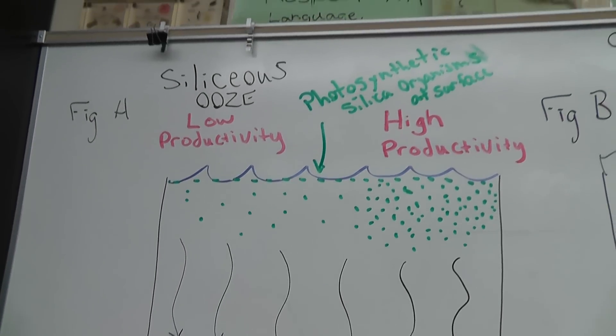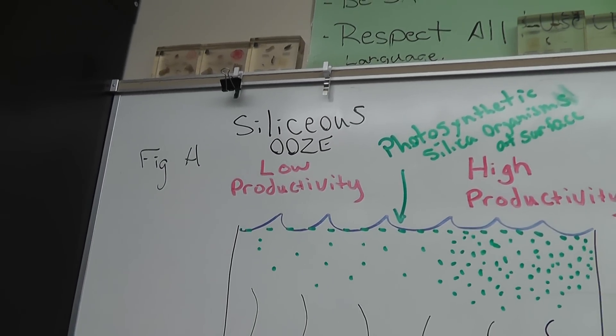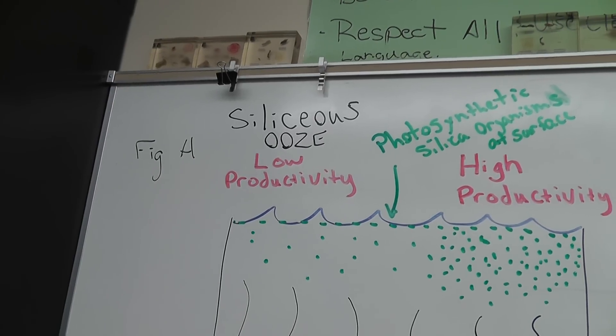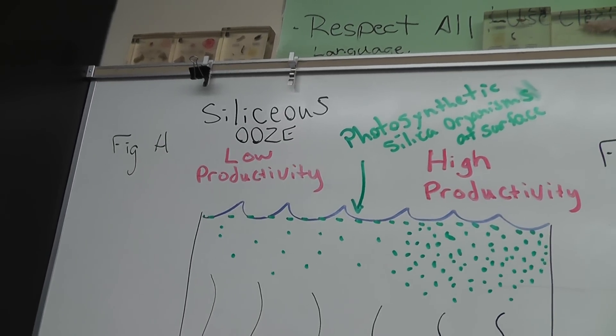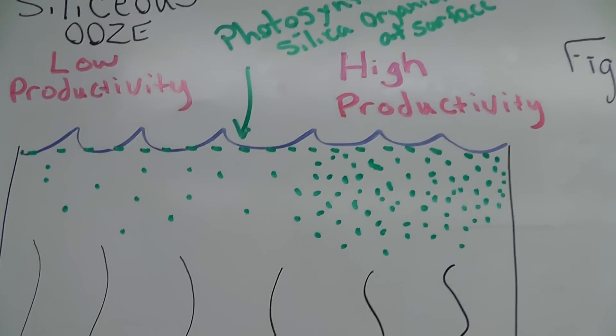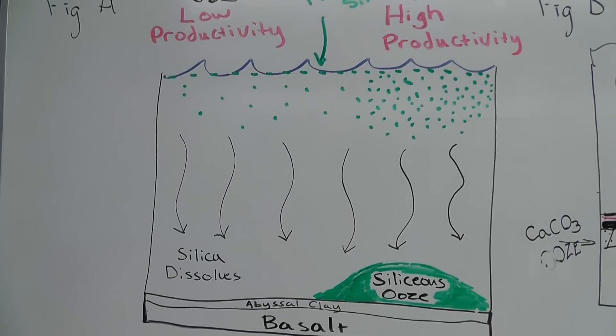we are talking about silica ooze. Remember silica ooze comes from silica producing organisms. So we have a great amount, so in this cross-section of the ocean that we see right here,